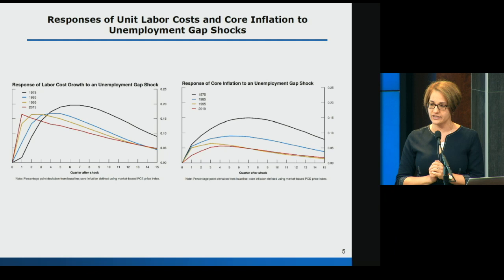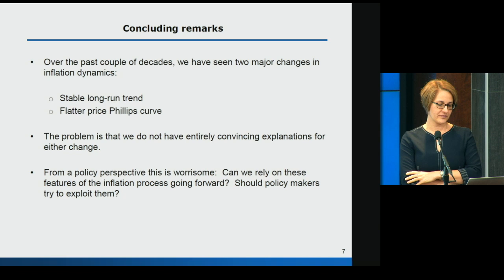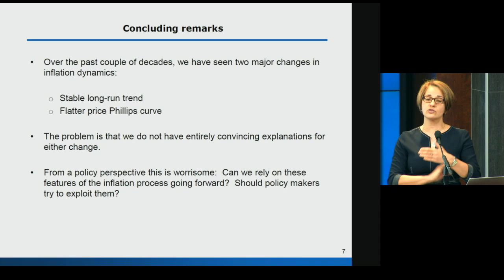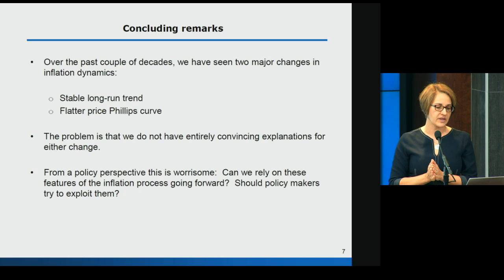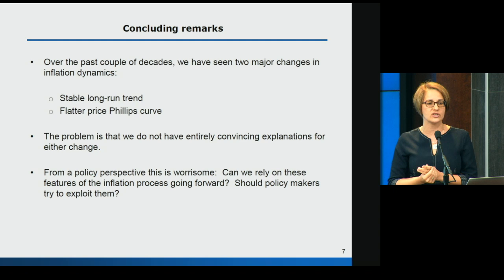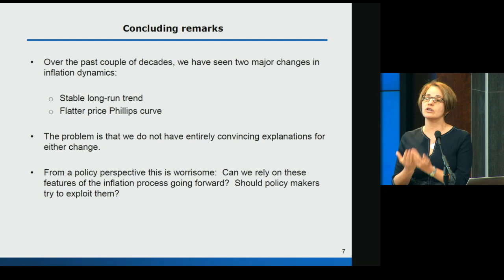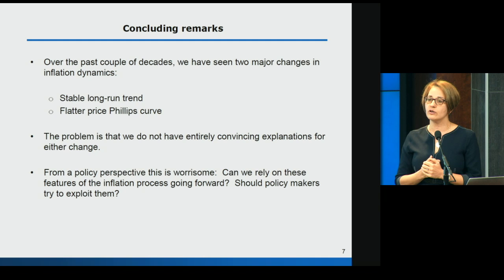Before passing on to Jared, I want to reiterate two things. Over the last couple of decades we've seen two major changes: one is the change in the trend, which is now much more stable; the second is that we have a flatter Phillips curve. We don't perfectly understand the reasons behind those changes—we have hypotheses and a lot of research is ongoing, but we don't have a very good understanding of what's driving them. From a policy perspective, it's worrisome: how much do we think these trends will continue, what will move them away, and can we exploit the stability in a productive way? Thank you.